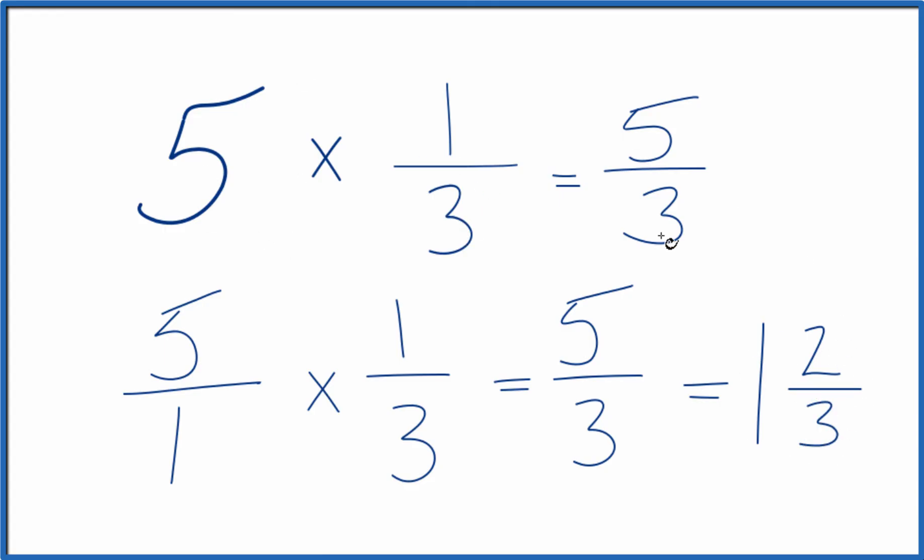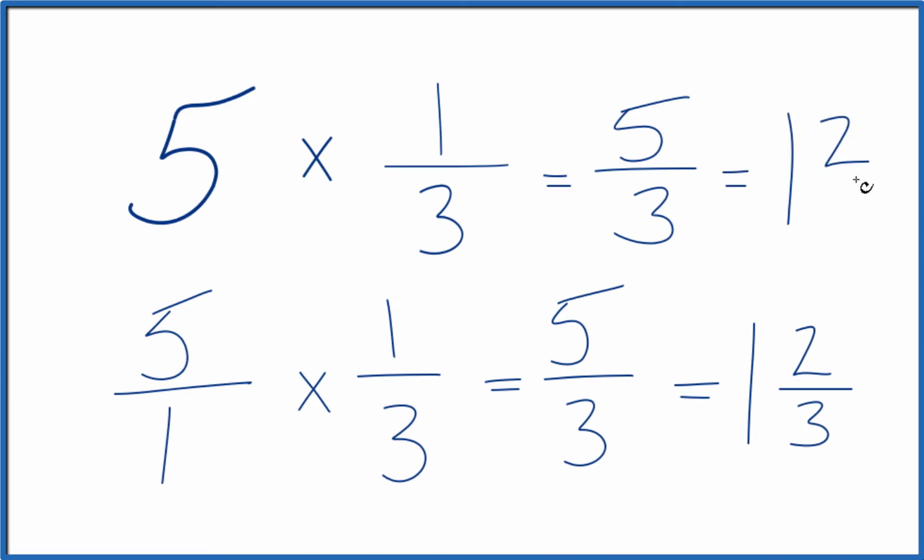So when we multiply 5 times 1 third, we'll get 5 thirds. Or if you want a mixed number, 1 and 2 thirds.